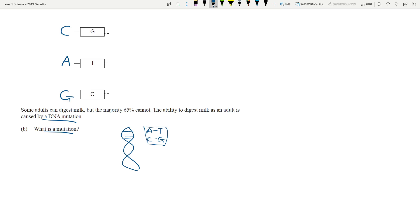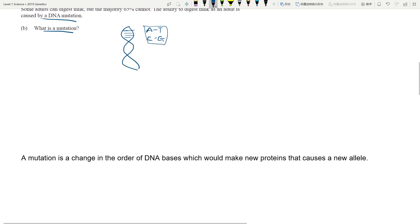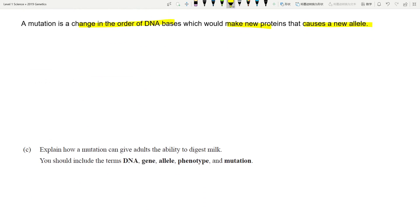That's what mutation does - it changes the base sequence of the DNA and that normally results in creation of new alleles. DNA is a change in the order, the base sequence or the order of the DNA bases, which make new proteins that causes a new allele.